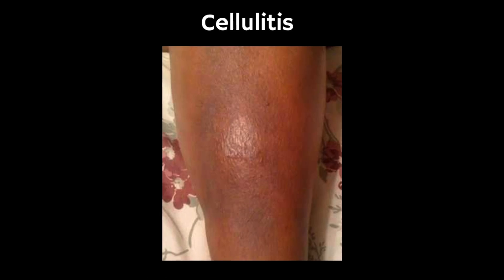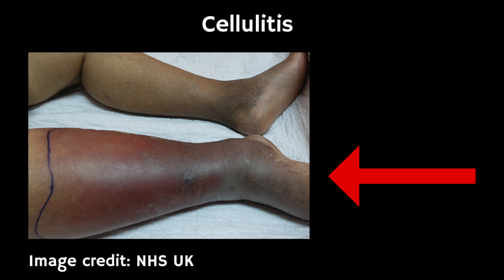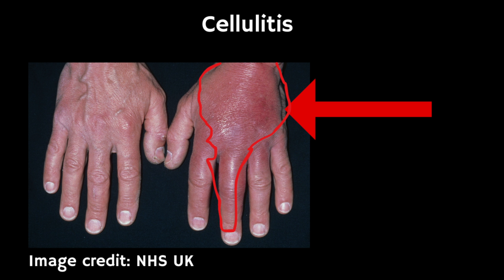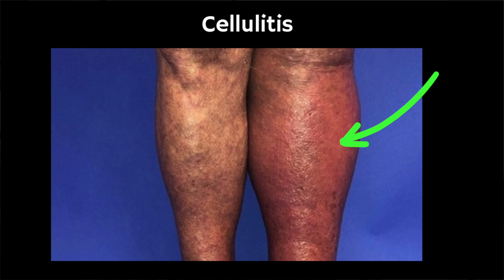Symptoms and signs of cellulitis can include pain, tenderness, warmth, and swelling of the skin, and it can affect any part of the body including the legs, the hands, the feet, and even around your eyes. It's also common for the skin to turn red or purple, which may look like a rash as you can see in these photos, but it's important to note that this may be less noticeable on brown or black skin.